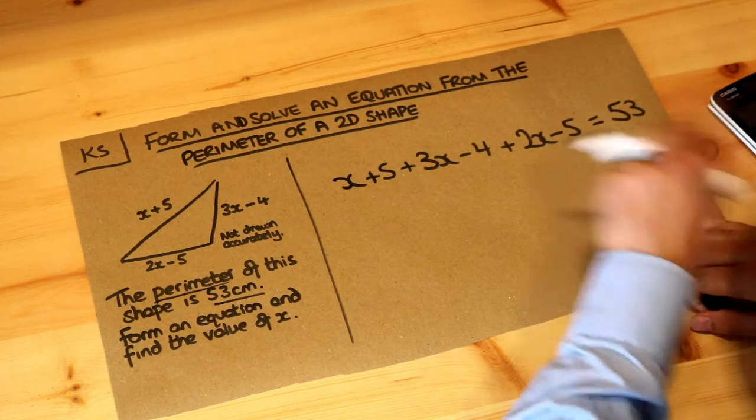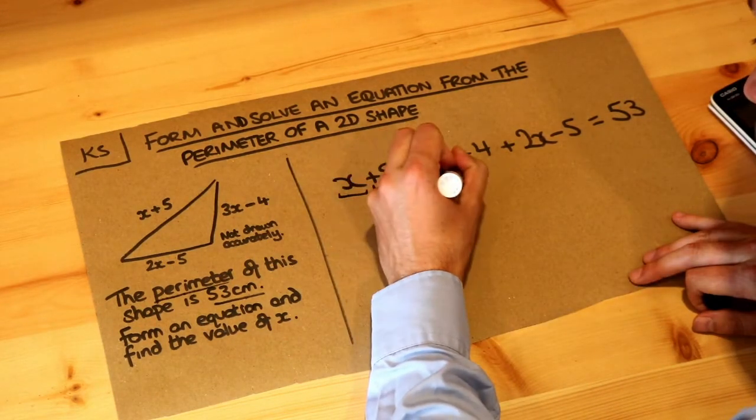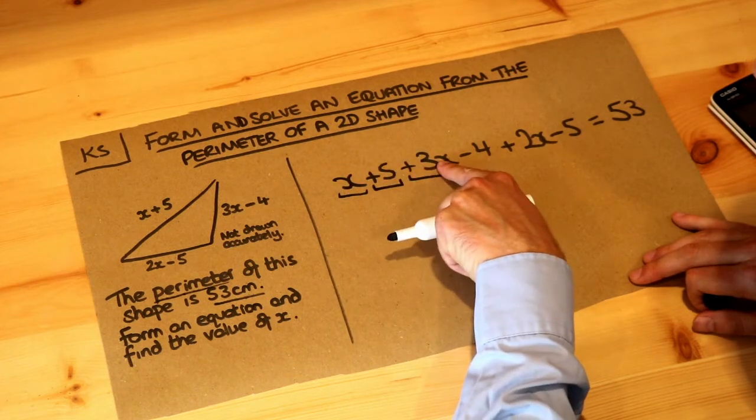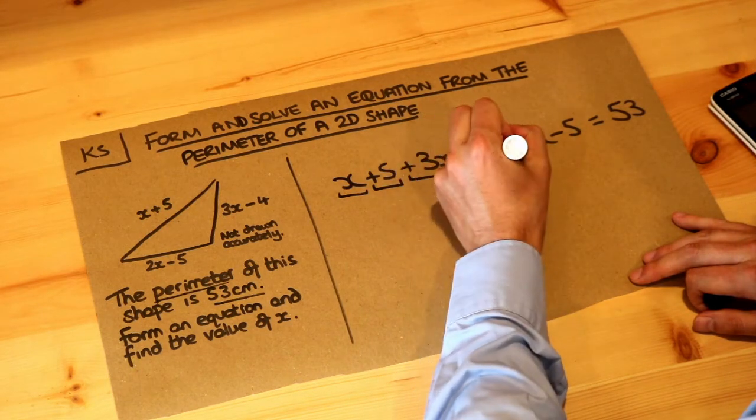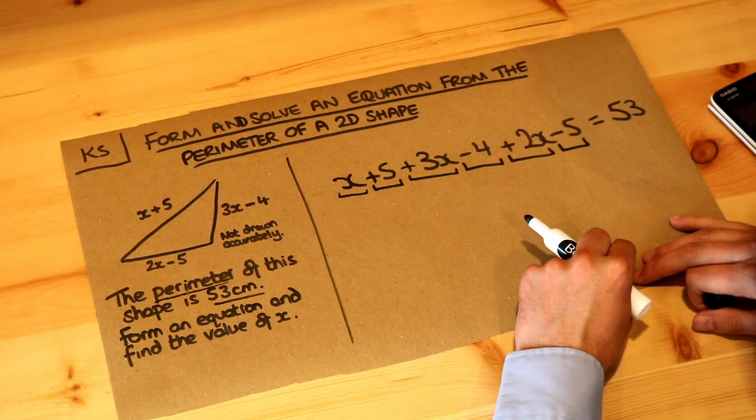So let's first simplify this. We want to tidy up the left-hand side by collecting like terms. So I underline each term, including the plus or minus on the front of each term. So minus 5, and then I've got 53.